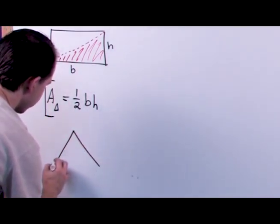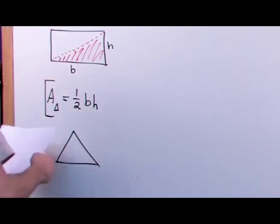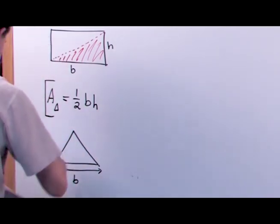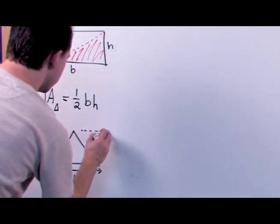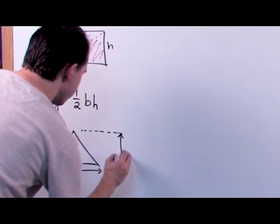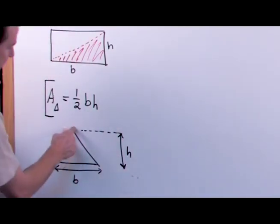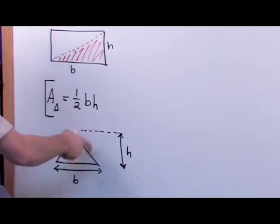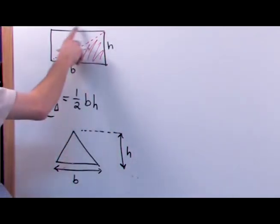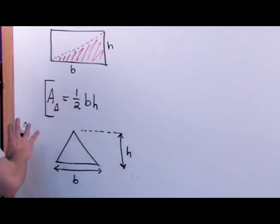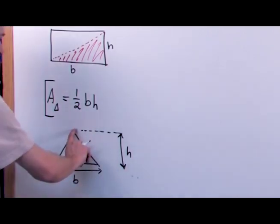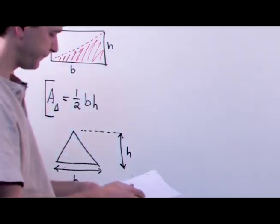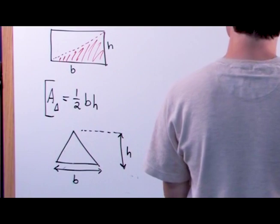The area of a triangle is one-half times the base times the height. In general, for any triangle: the base is the dimension along the bottom, and the height is the vertical height — not this slanted leg, nothing other than the actual vertical height, just as we defined it here. This formula is applicable to all triangles: one-half base times height gives you the area inside the triangle.